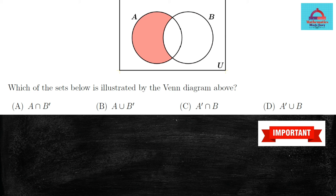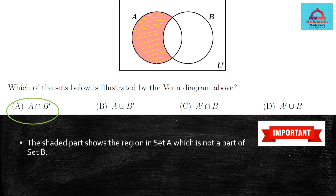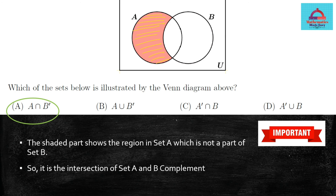The correct answer is option A. The shaded region is that part of set A which is only in A and not in B. That gives the main reason for choosing A as the answer — it is the part of set A that is not part of set B. We can say it is A intersection B complement. You may follow the steps from the previous question to draw the Venn diagram and verify your answer.